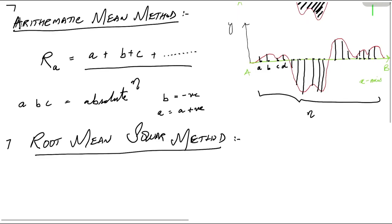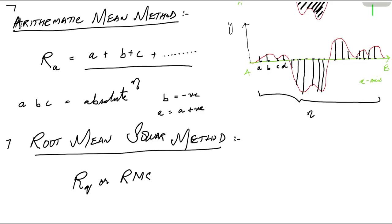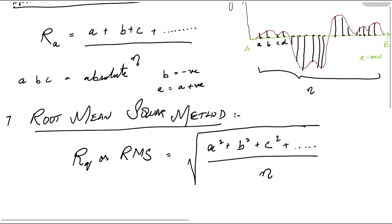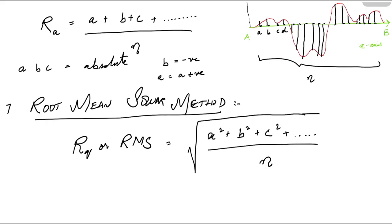The second method is root mean square roughness, denoted by Rq or previously RMS. The formula for root mean square is: Rq equals the square root of (A squared plus B squared plus C squared plus so on), all divided by N. These are the two most important and most commonly used methods for obtaining surface roughness values.